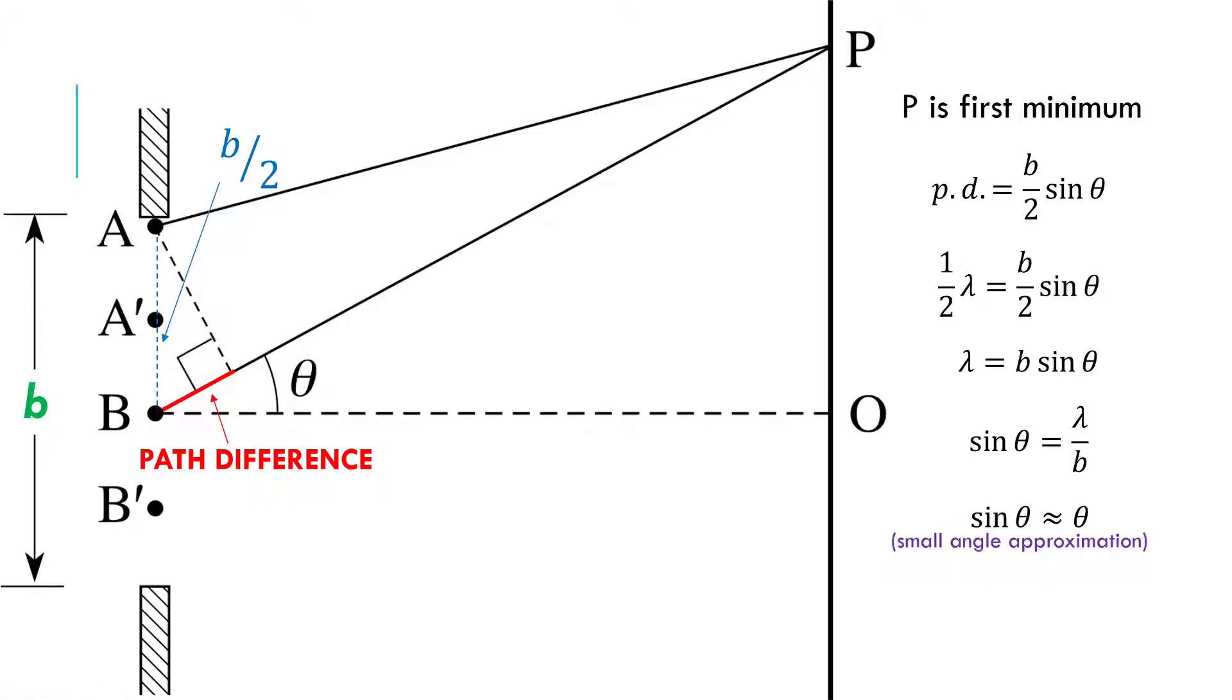Again, this works for small angles only, so usually less than, like, 5 degrees, 10 degrees. It starts getting a little funky, but still pretty good. One thing to note here is you definitely need to be in radians, be in radians, right?